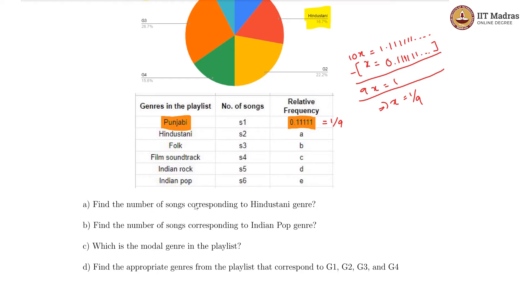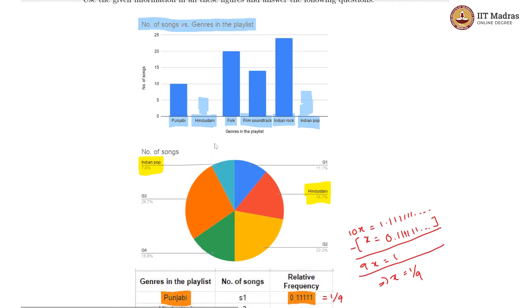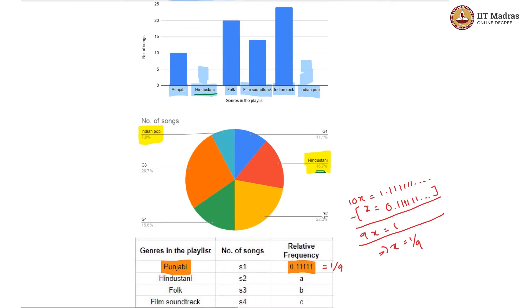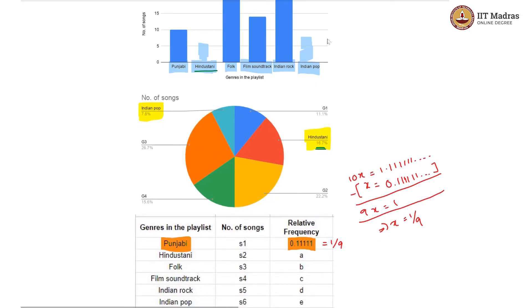Find the number of songs corresponding to the Hindustani genre. As expected, the Hindustani one, it is empty. We do not know what is the Hindustani genre songs from this particular graph. Let us look at the next one. We know it is 16.7 percent of the total. The problem is we do not know what the total is. So how do we crack this? Let us look at further more data.